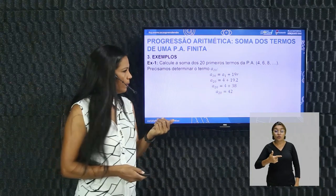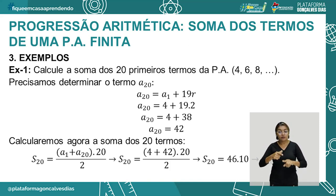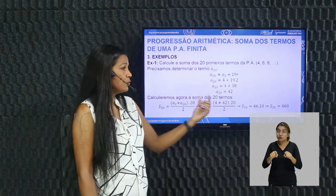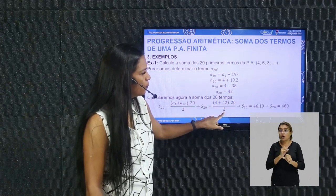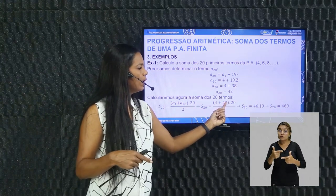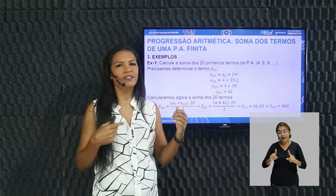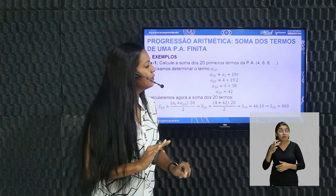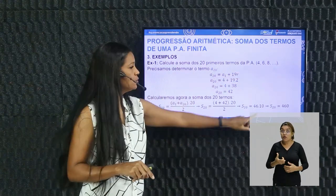Passemos ao segundo exemplo, já em formato de soma de termos. A sequência é uma PA de razão 7, com primeiro e último termos claramente identificados. Não preciso identificá-los; vou direto descobrir a quantidade N de termos usando o termo geral: AN = A1 + (N-1)·R, ou seja, 303 = -61 + (N-1)·7. Resolvendo: 303 + 61 = 364; 364 + 7 = 371... 7N = 372, portanto N = 53.